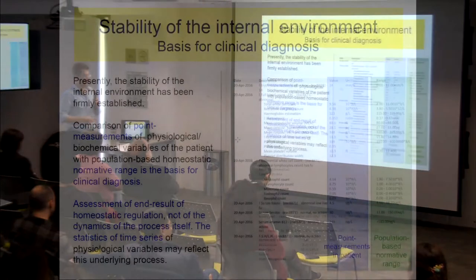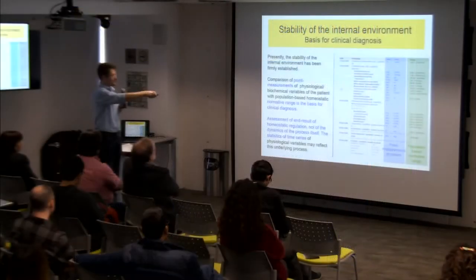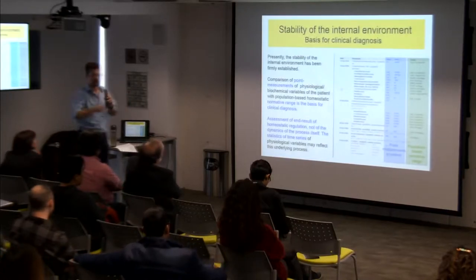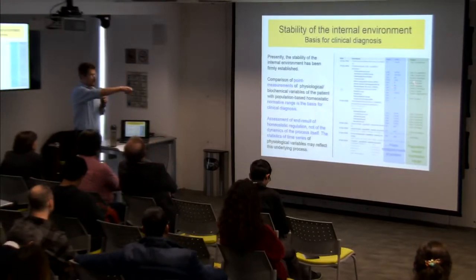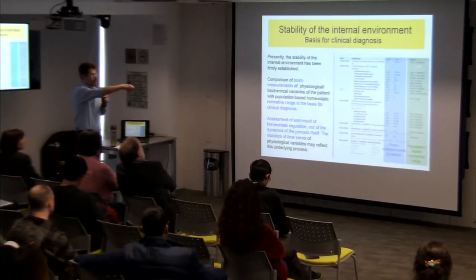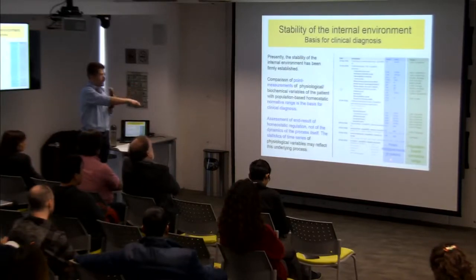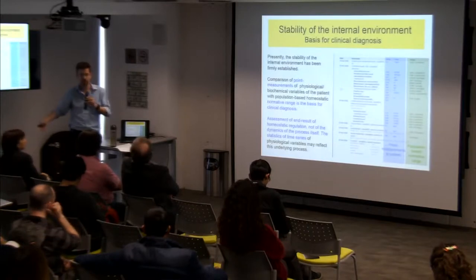Nowadays we have all this technology not only to verify that the internal environment stays constant, but we use it to perform clinical diagnosis. If you do a blood test, you get a table with many parameters. What people look for is that these point measurements of chemical ingredients in the blood are maintained within a very narrow homeostatic range defined by population studies. If all your parameters are within this range, you're defined as healthy; if outside, you have some problems.